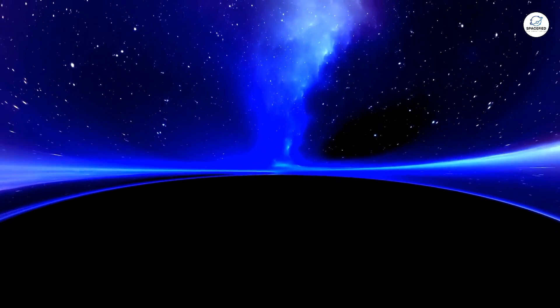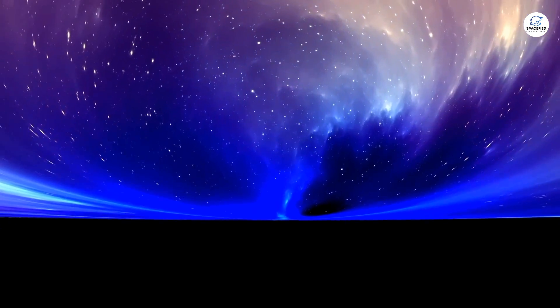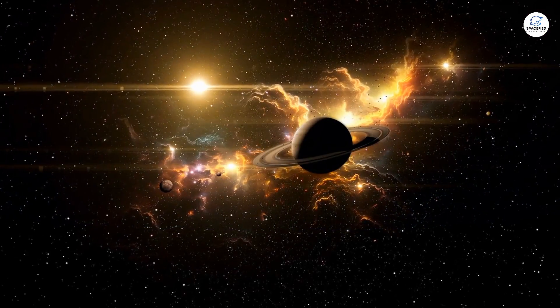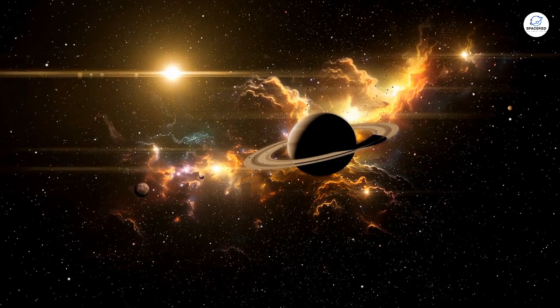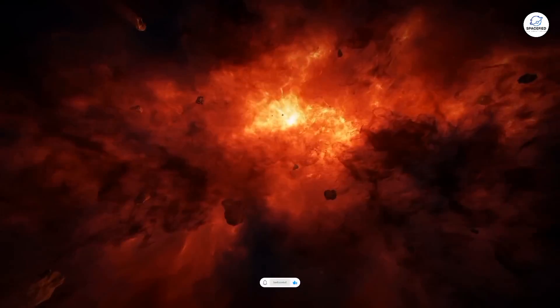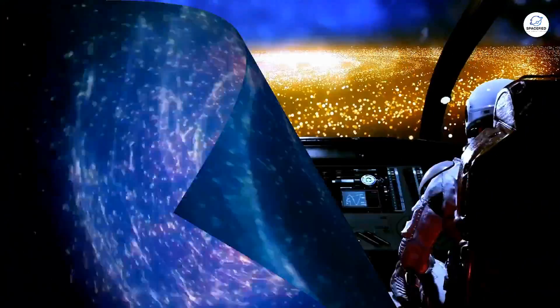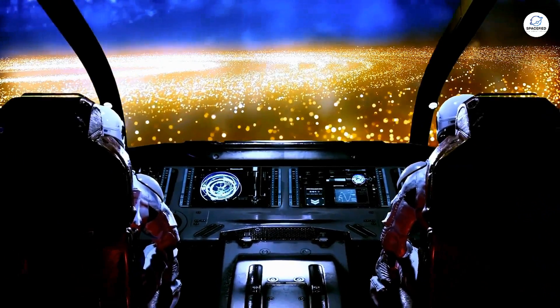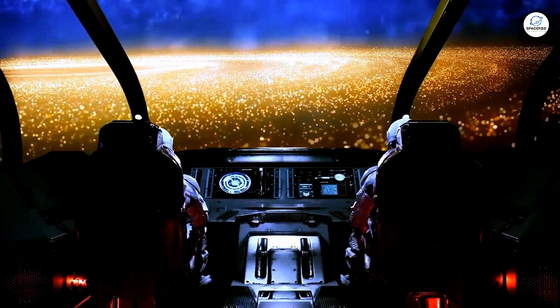One of the most intriguing questions about the unobservable universe is whether it has an edge. The observable universe has a defined limit, but the universe itself might not. Current models suggest that the universe could be infinite, curving in on itself like the surface of a sphere. If this is the case, traveling in one direction indefinitely would eventually bring you back to your starting point.